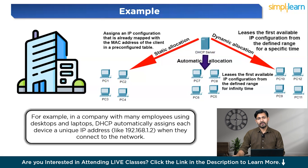DHCP assigns a unique IP address like 192.168.1.2 when devices connect to the network. It also provides other important details: the subnet mask, which helps the device understand which part of the IP address is the network and which part is the device; the router's address as gateway to other networks, usually something like 192.168.1.1; and the DNS address, which helps the device find websites, such as using 8.8.8.8 to reach Google.